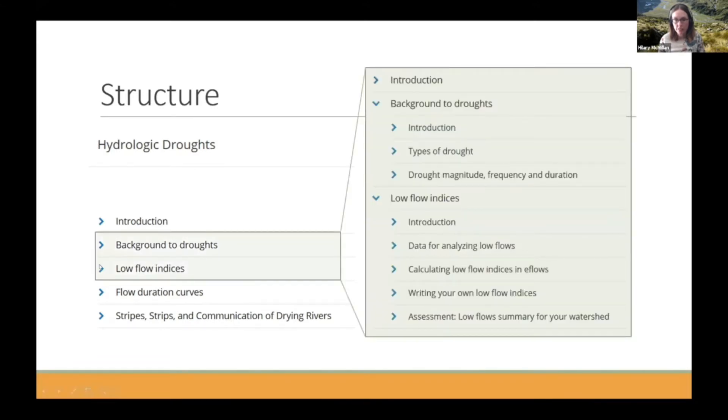So I'm going to talk about the first two sections briefly and then Joanne will introduce the second two sections. So just to give you an overview here. So this is their background section, learning about the drought terms. And then this is the first of the two quantitative sections where they're going to calculate various low flow indices for the river.